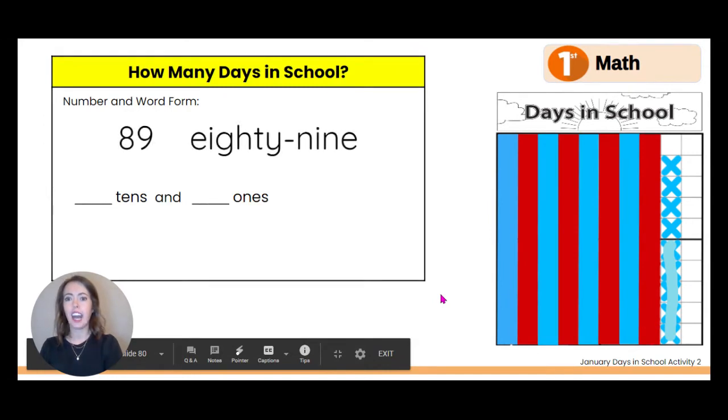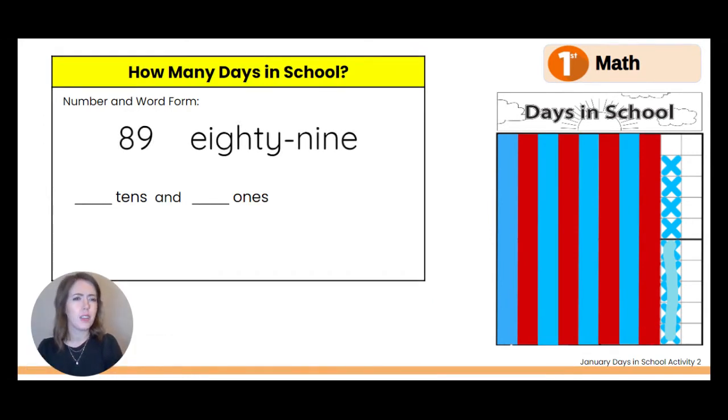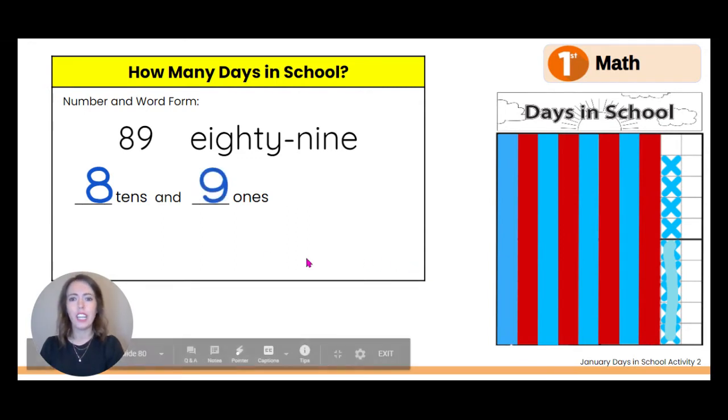Let's write it down. 89. How many tens are in 89? How many ten rods do we count? Eight tens. And then how many ones? Yes, nine ones. And when we look at the number 89, there's an eight in the tens place, eight tens. And there's a nine in the ones place, nine ones.